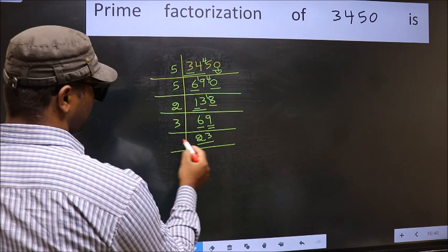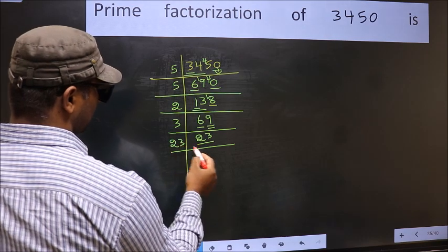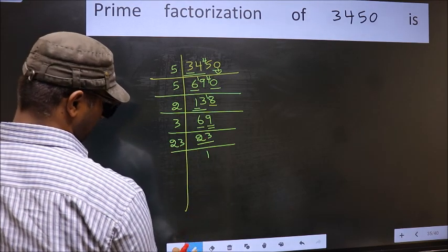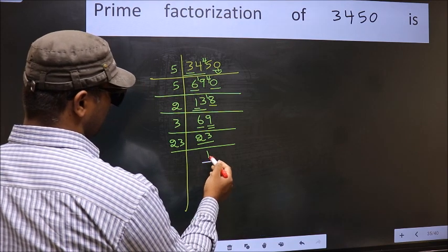Now here we have 23. 23 is a prime number. So 23 times 1 is 23. So we got 1 here.